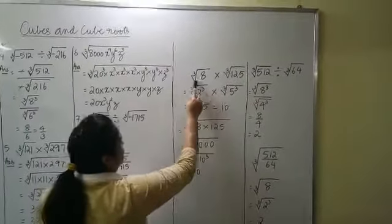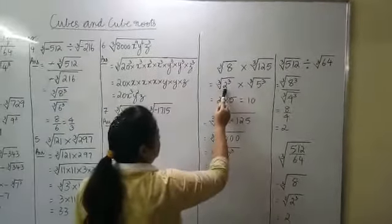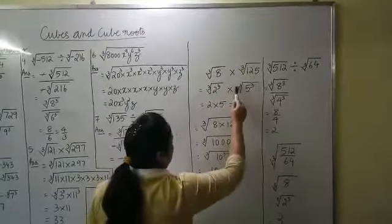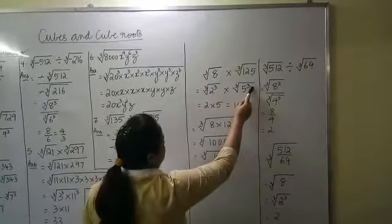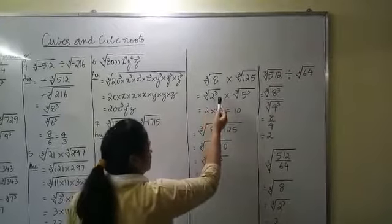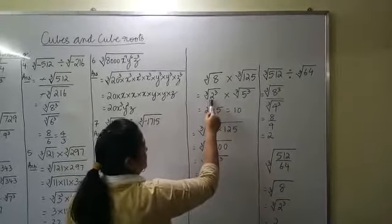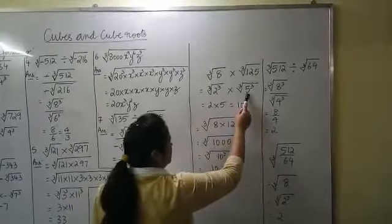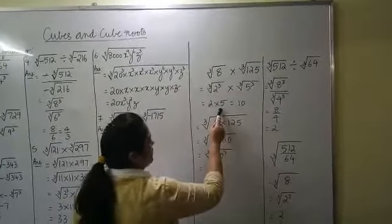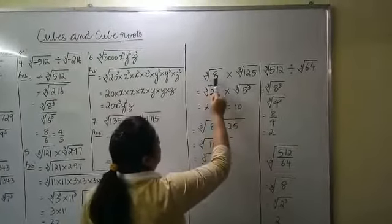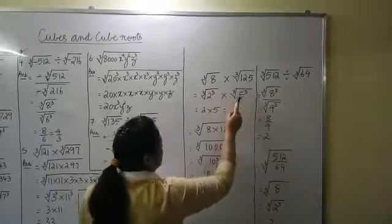How do you simplify this? Cube root of 8 is 2 cubed, and 125 is 5 cubed. We have cube root of 2 cubed and cube root of 5 cubed. Then the next step: 2 cubed means we have three 2's, so one 2 comes out of the cube root. Here we have three 5's, so one 5 comes out of the cube root. 2 into 5 is 10. So cube root of 8 into cube root of 125 is 10.